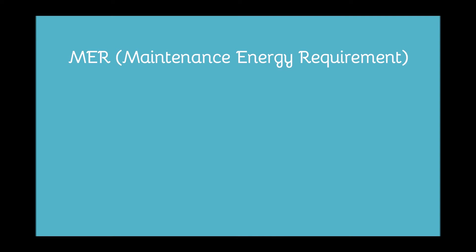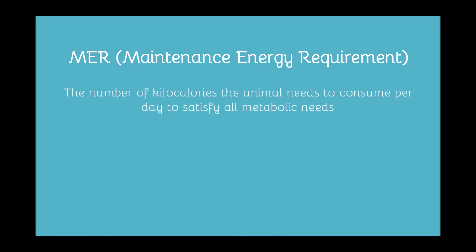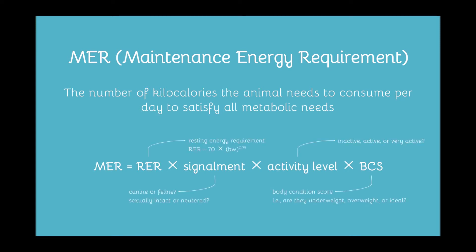We're going to start off with what is called the maintenance energy requirement. The maintenance energy requirement is the number of calories the pet needs to consume each day to satisfy all their metabolic needs. Here is that equation: MER equals RER times signalment times activity level times body condition score. These are all called factors. Resting energy requirement, or RER, is simply the number of calories the pet needs for basic metabolic needs — just simple breathing and sleeping.